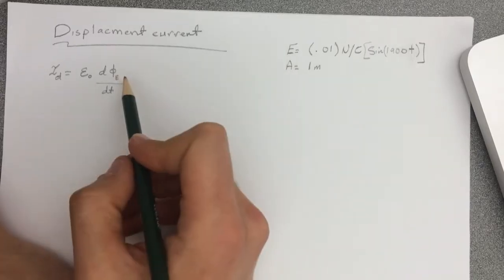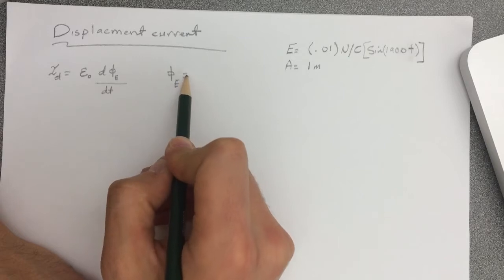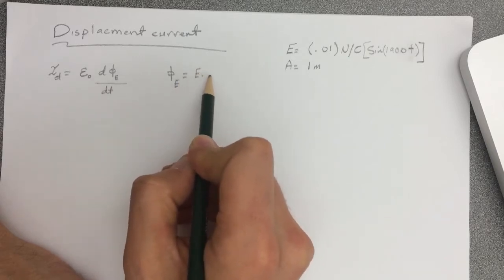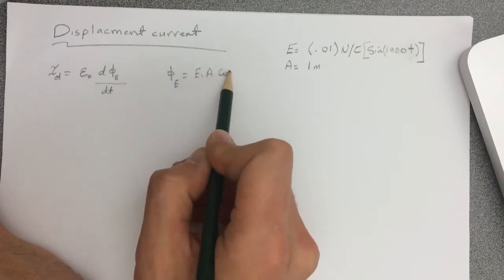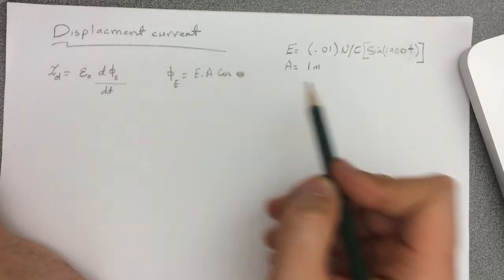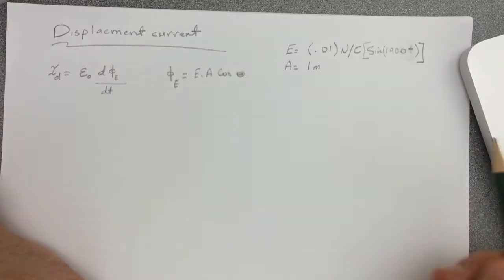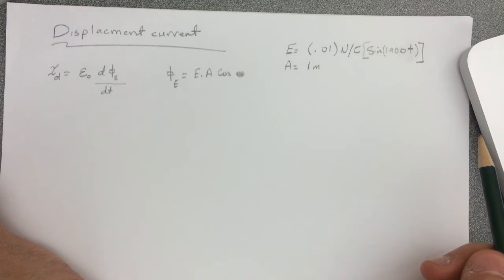The flux, electric flux, is equal to E dot A which is E A cosine of theta. Well, in the question they said find the maximum displacement current through one meter area perpendicular to E.